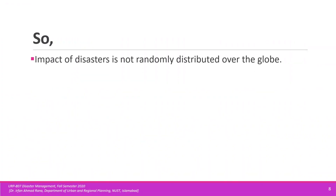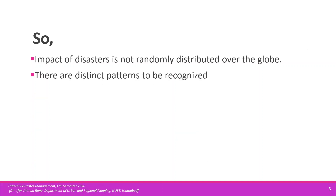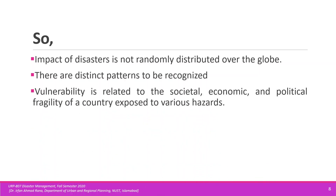Vulnerability can be explained through the fact that the impacts of disasters are not equally distributed — they are not randomly distributed over the world, but are very much concentrated in poor or developing countries. However, we can find commonalities among these countries and understand why they are vulnerable. We can generally categorize these as societal, economic, political, and institutional factors.